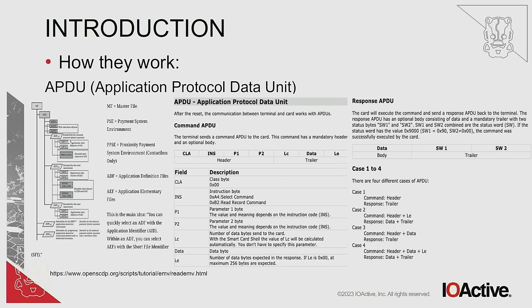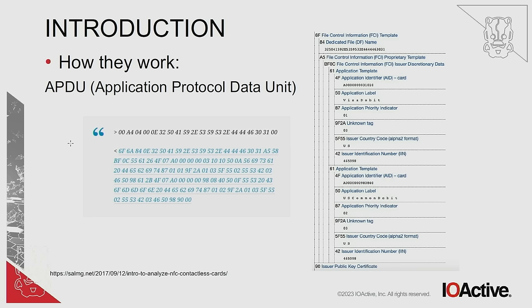At the application layer, we have what are called APDUs. The credit card sends these to the reader, and they're based on TLV — tag, length, value. One byte indicates the tag, one byte indicates the length of the packet, and then the value itself. It's straightforward to understand the grammar of these packets. If you sniff the communications with a Proxmark, for instance, you can see the NFC low-level protocol commands alongside the APDUs exchanged between the reader and card at the application layer.